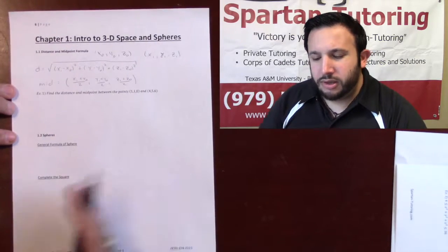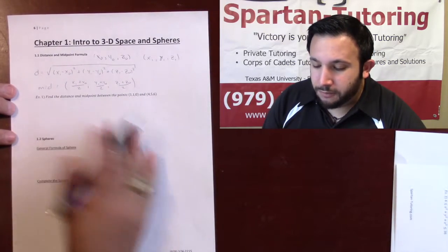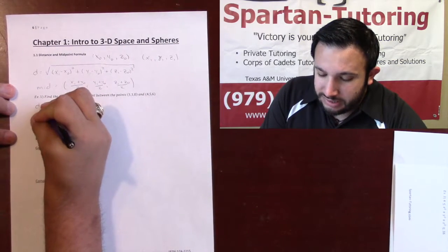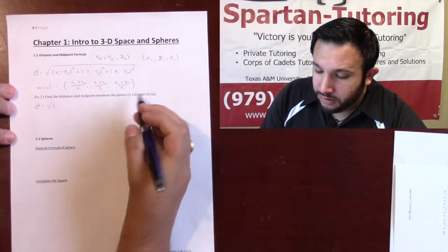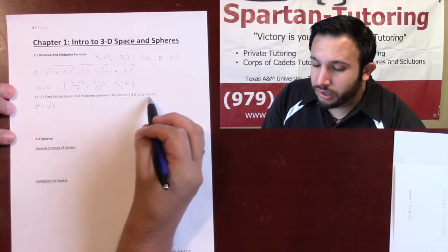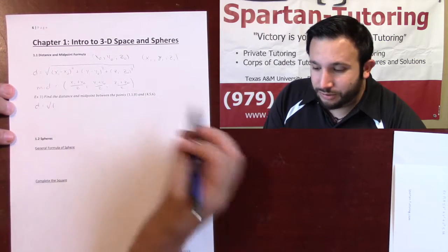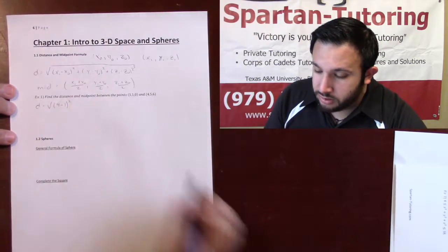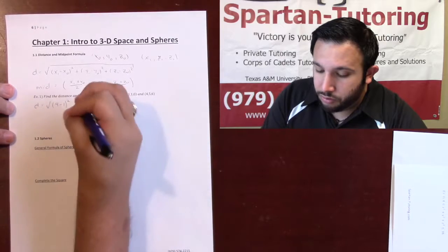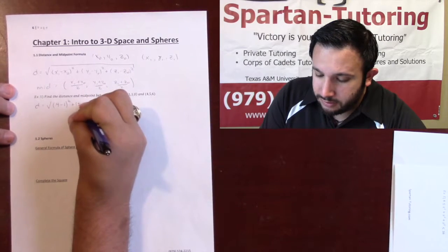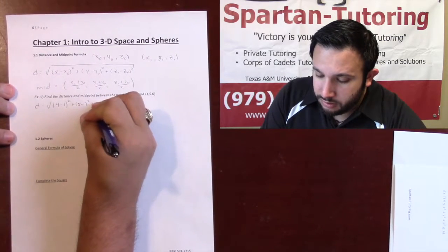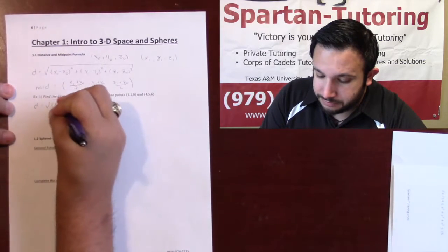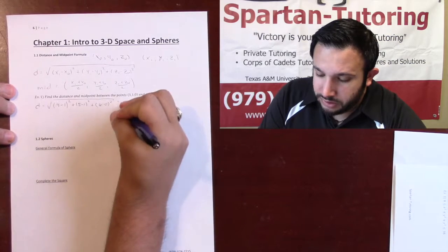Let's do a quick example. If I want to find the distance and midpoint between two points, distance is going to be the square root of — we'll call this the initial point and this x1, y1, z1. So this is going to be (x1 minus x0) squared, so 4 minus 1. Then the y's: plus (5 minus 1) squared. Then the z's: plus (6 minus 0) squared.